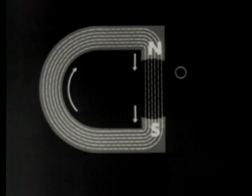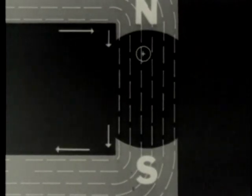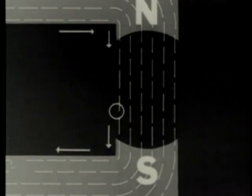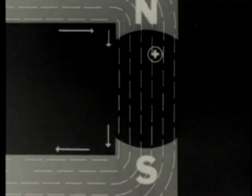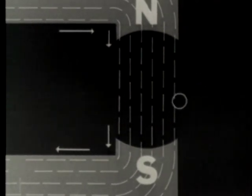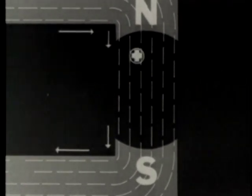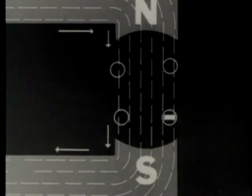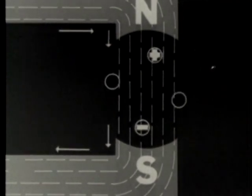If we also concentrate the magnetic field by bringing the north and south poles of a magnet closer and either increase the speed of breaking the magnetic field or increase the number of wires rotating across the lines of force, we will have a generator.